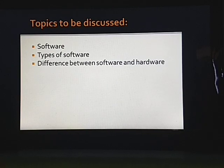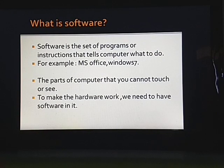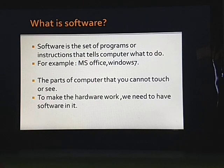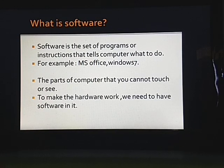So children, what is software? Software is the set of programs or instructions that tells the computer what to do. For example, MS Paint, MS Office, Windows XP, Windows 7 — these all are softwares.